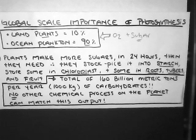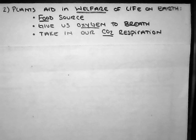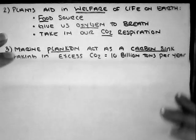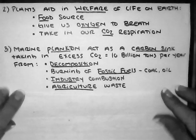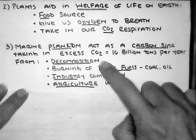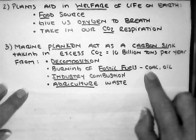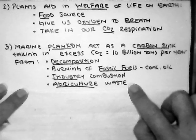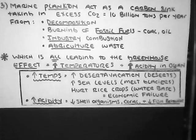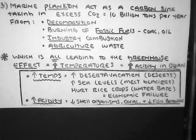Lucky for us, this overabundance of sugars and oxygen allows us to have food and air. Plants give us a food source, they give us oxygen, and most importantly they actually take in CO2 — so they're actually what's known as a carbon sink. CO2 is actually produced in many different ways. Marine plankton specifically, because they cover 90% of the planet, actually help take in CO2 that's used from decomposition, burning of fossil fuels in our cars, industry, all that pollution and waste from agriculture. If we have too much CO2, it can lead to very drastic effects — one of them is the greenhouse effect, another one is global warming, and one of the worst ones we're finding nowadays is ocean acidification.